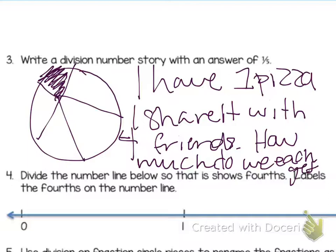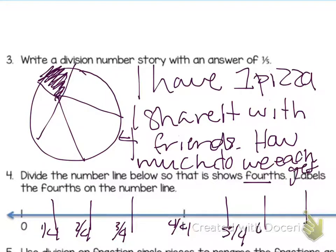Number 4 says divide the number line below so that it shows fourths. Your key word in fourths is 4, so I should have 4 parts. Label the fourths on the number line. So I split it in half, I have 2. Split them in halves again, now I have 4 parts. 1 fourths, 2 fourths, 3 fourths, 4 fourths. Same with this one. 5 fourths, 6 fourths, 7 fourths, then 8 fourths would be at 2.